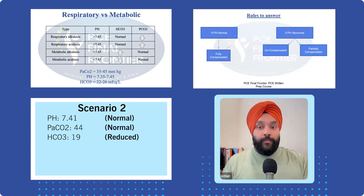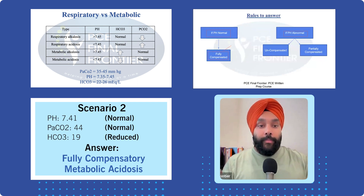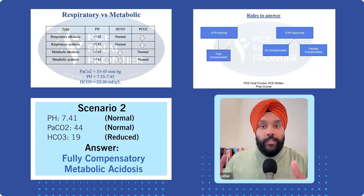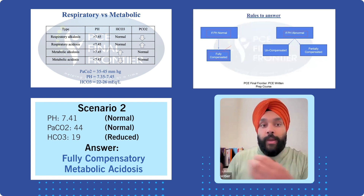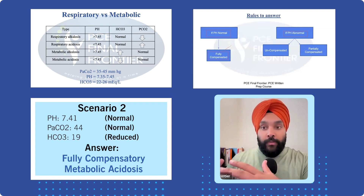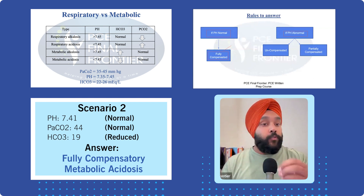Bicarbonates are reduced to 19 — below the normal range of 22 to 26. So what do you call this situation? Fully compensated metabolic acidosis. We call it fully compensated because pH came back to normal values, meaning bicarbonates were able to completely compensate and pull pH into normal limits.